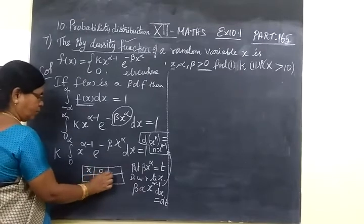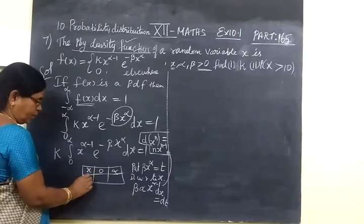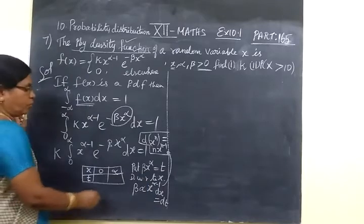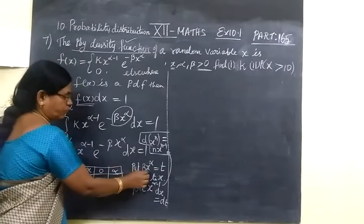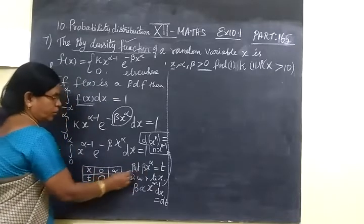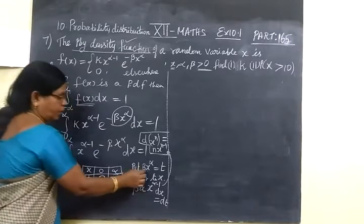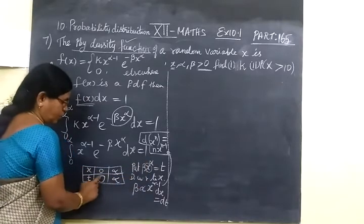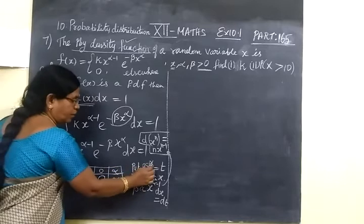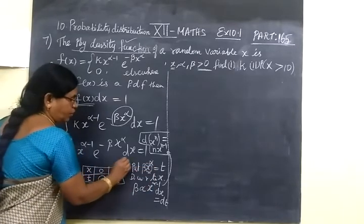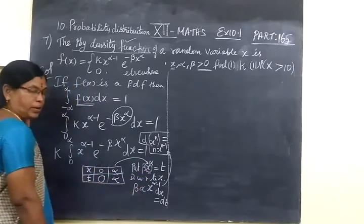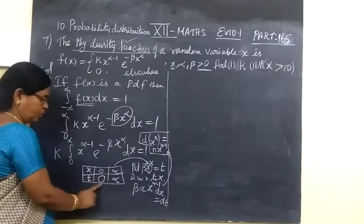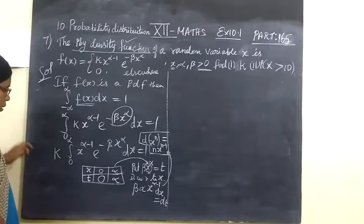The limit for X is 0 to infinity. Since we changed the variable to T, when X equals 0, t equals 0^α equals 0, and when X equals infinity, t equals infinity^α equals infinity. So the limit for T is also 0 to infinity.